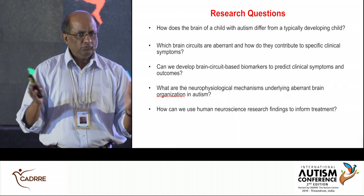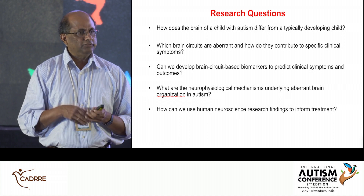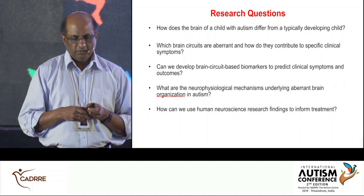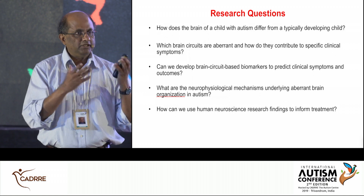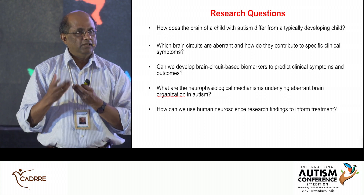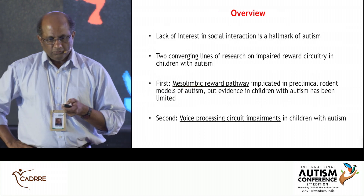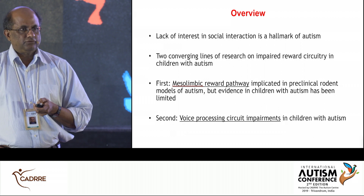Can we develop brain-based biomarkers that allow us to predict clinical symptoms and outcomes — for example, who is going to develop normal language or social skills? And can we use what we've learned to inform treatment, identify subtypes, and tailor treatments?